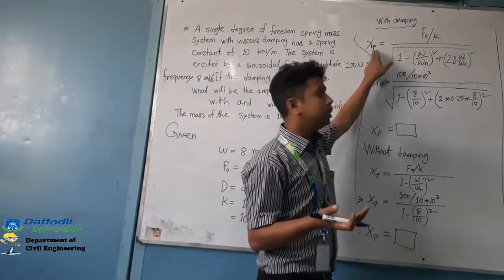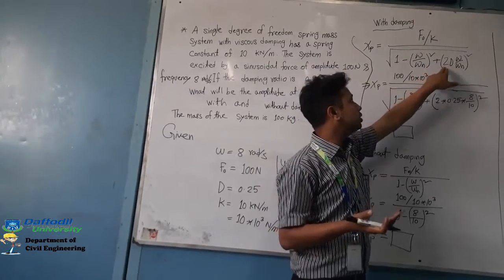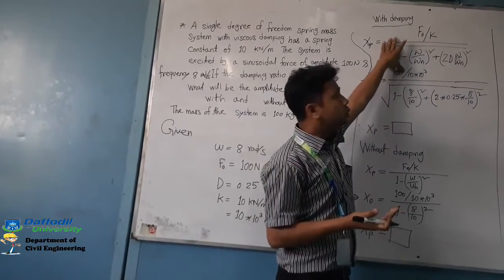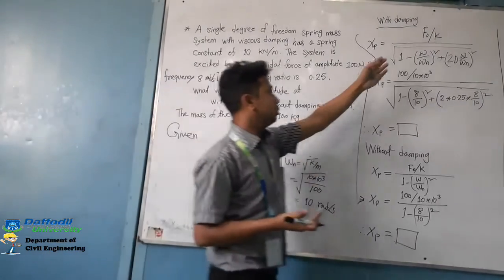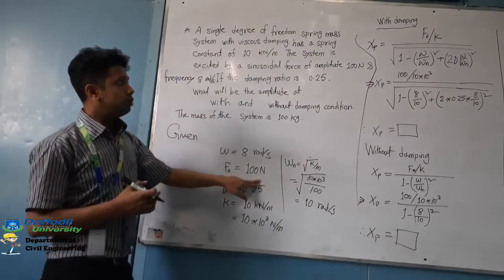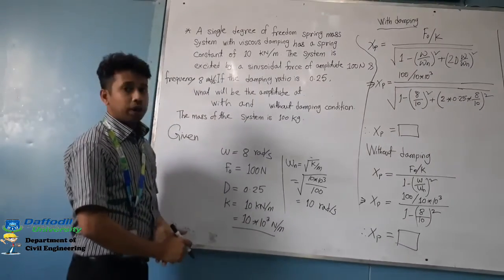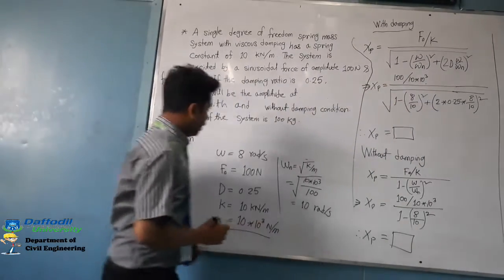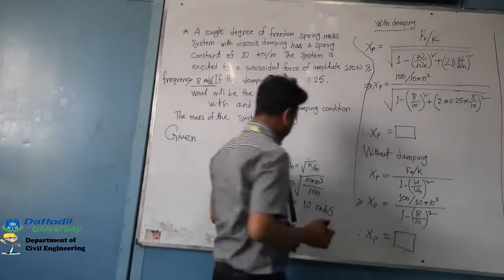The equation is X_p equals F0 divided by k, divided by the square root of [1 minus omega squared divided by omega_n squared] squared plus [2 zeta omega divided by omega_n] squared. Given F0 equals 100 newton, we divide it by k, so k will be equal to 10 times 10 to the 3 newton per meter. Omega equals 8.